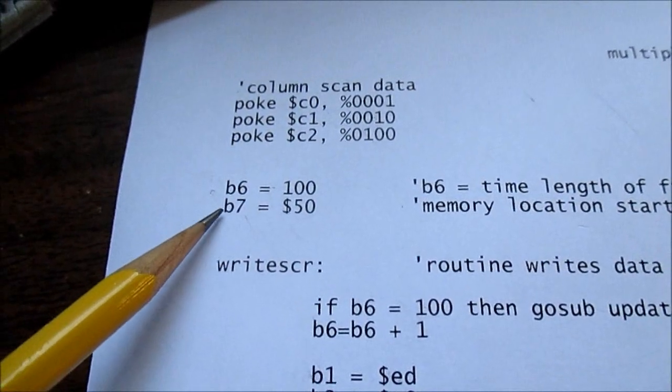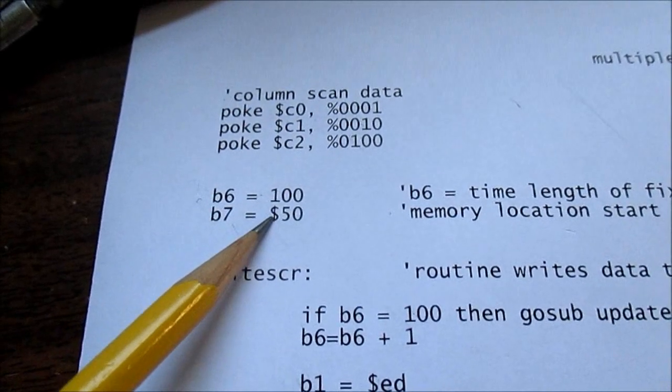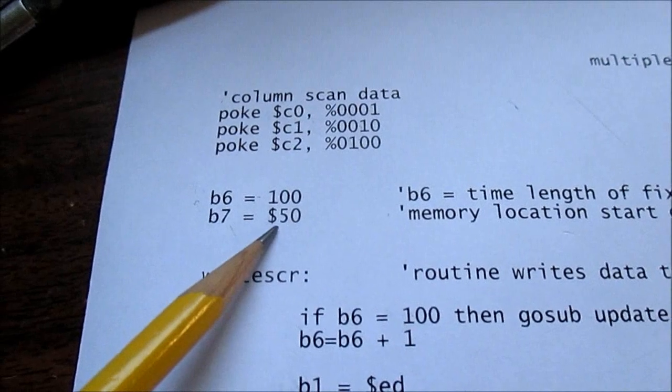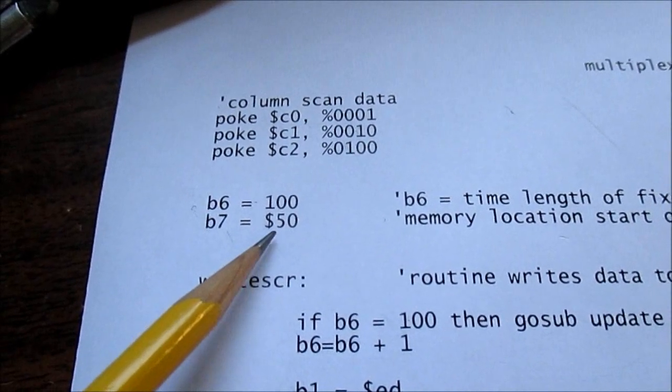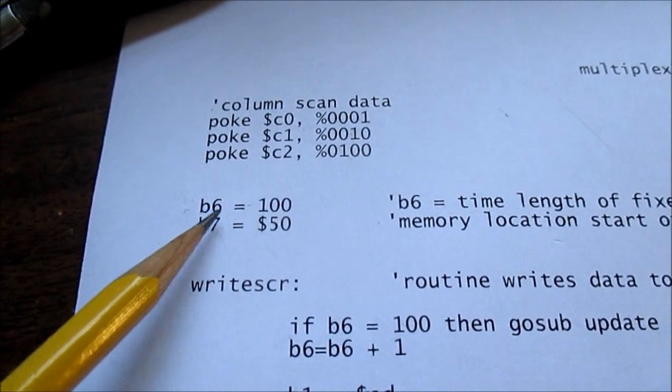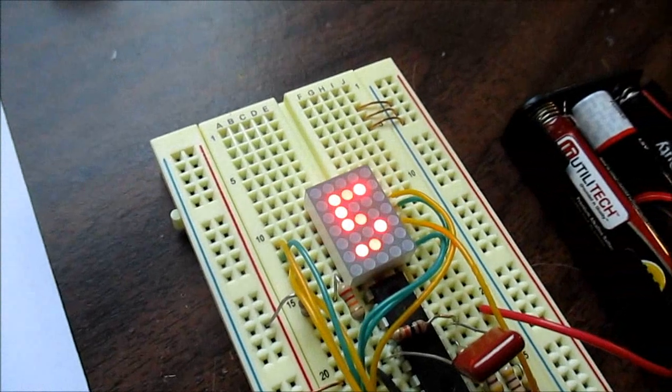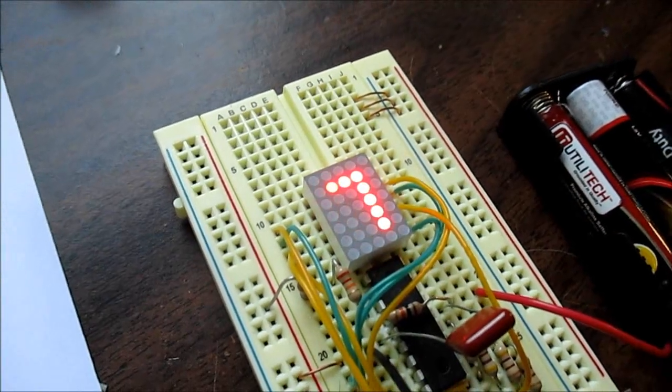Okay, so B7 is just a variable, and I'm putting the starting address location, not the contents of that address, just the starting address in the B7. B6 is a counter. That's how long the digit is displayed, about one second.